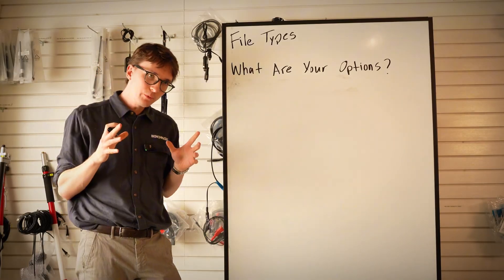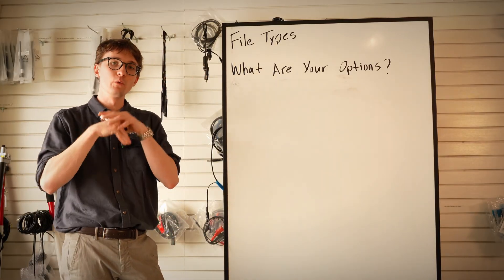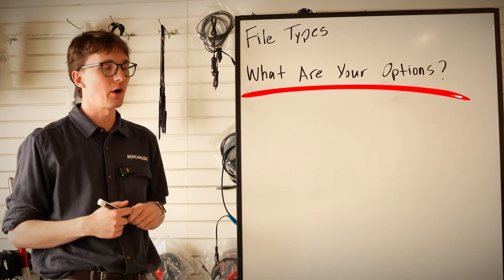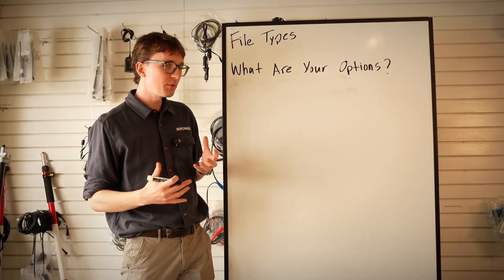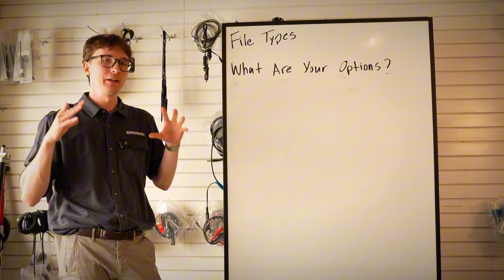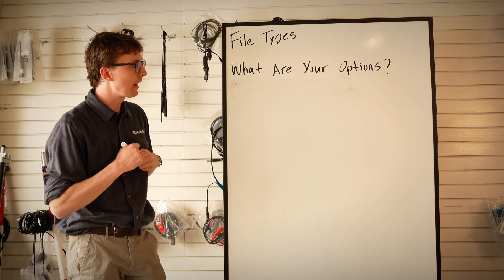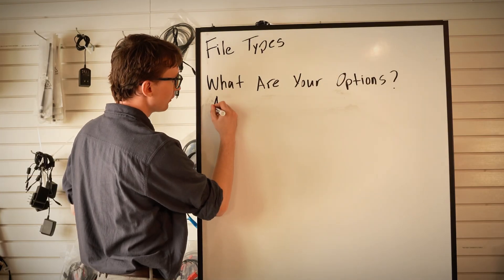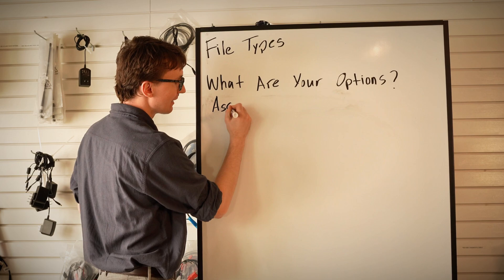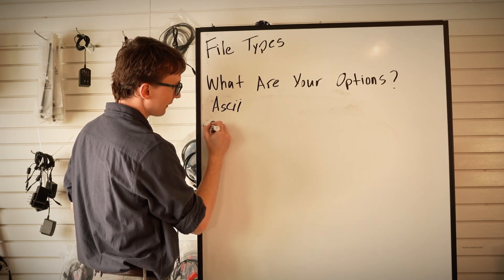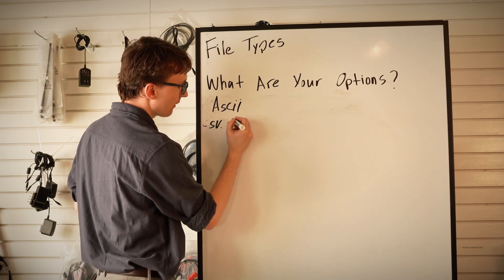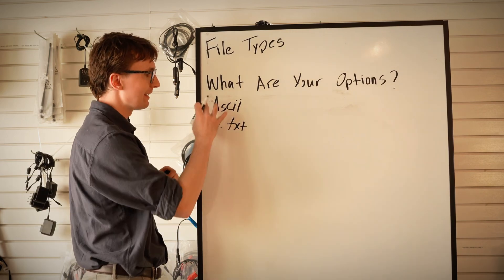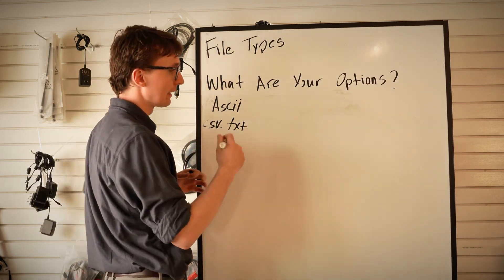The first thing we need to do before getting into which one's the best for you is understand what your options are. For our purposes there are effectively four different kinds of files. There are very basic ASCII files, which include things like CSV files and text files — a very rough kind of coordinate file.